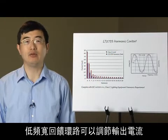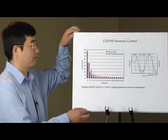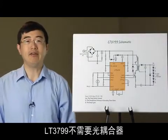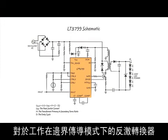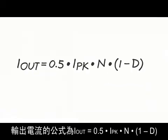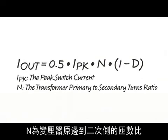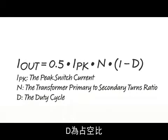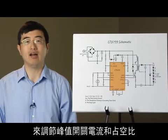A low bandwidth feedback loop keeps output current regulated without distorting the input current. The LT3799 requires no optocoupler and senses the output current from the primary side switch current waveform. For a flyback converter operating in boundary conduction mode, the equation for the output current is: Iout = 0.5 × Ipk × N × (1 − D), where Ipk is the peak switch current, N is the transformer primary-to-secondary turns ratio, and D is the duty cycle. The IC regulates the output current by adjusting the peak switch current and the duty cycle through a novel feedback control.